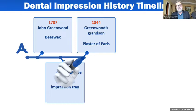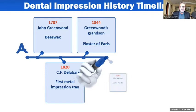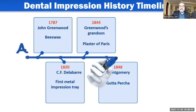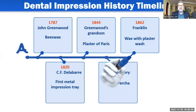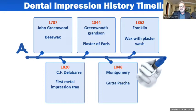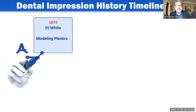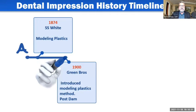We also used copper bands for individual die impressions. In 1848, Montgomery used gutta-percha as an impression material, which is now used for root canals. In 1862, Franklin was using wax with a plaster wash — pretty daring for the time. Continuing the timeline, SS White started utilizing modeling plastics in 1874. Then in 1900, the Green brothers introduced modeling plastic methods, including putting that material in the post dam area to capture the post dam on fully edentulous patients.